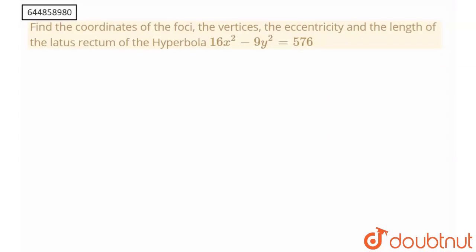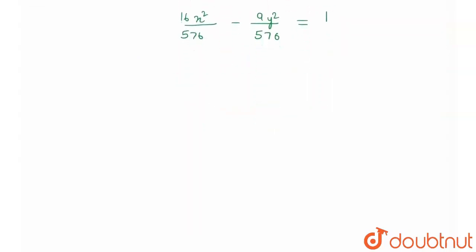So here the equation of hyperbola is 16x squared minus 9y squared is equal to 576. Let's divide both sides by 576. What will I get? x squared upon 16 upon 576 minus 9y squared upon 576, this would be equal to 1. Or I can say I'll get the final equation as x squared upon 36 minus y squared upon 64 is equal to 1.